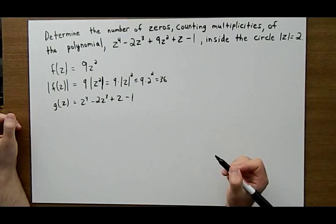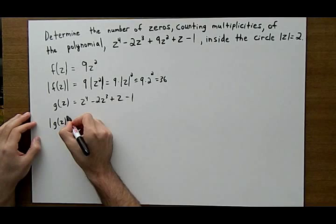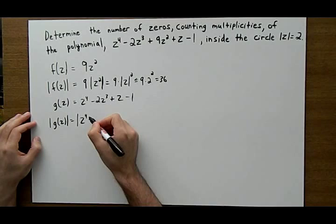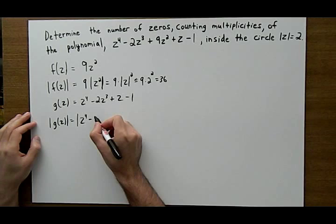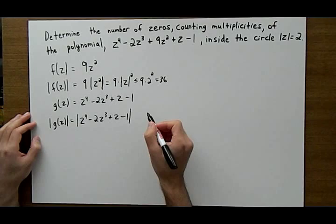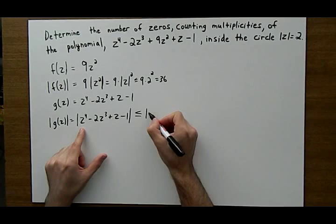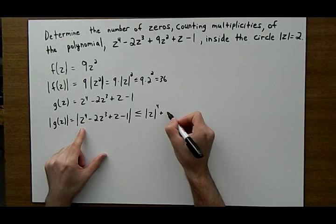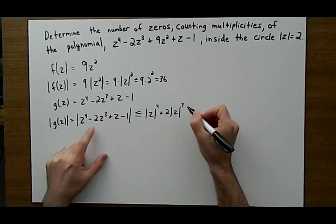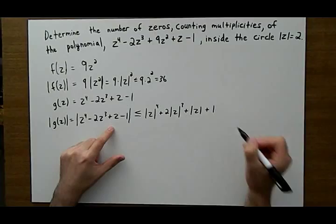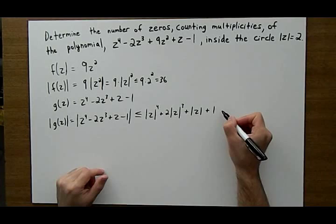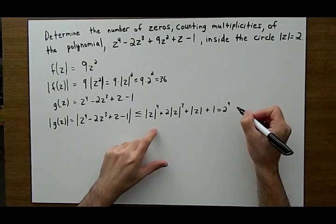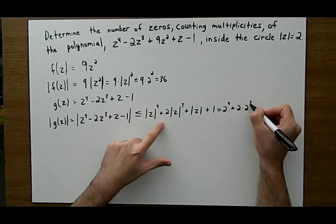And now we can see that the modulus of g of z is equal to the modulus of z to the 4 minus 2z cubed plus z minus 1, but all that is less than or equal to z to the 4 plus 2z cubed plus the modulus of z plus 1. The modulus of minus 1 is just positive 1. And now you're going to see that this is equal to 2 to the 4 plus 2 times 2 to the 3 plus 2 plus 1, which is equal to 35.